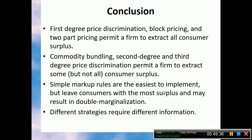In conclusion: first-degree price discrimination, block pricing, and two-part pricing permit a firm to extract all consumer surplus. Commodity bundling, second-degree, and third-degree price discrimination permit extraction of some but not all consumer surplus. Simple markup rules are easiest to implement but leave consumers with the most surplus and may result in double marginalization. Different strategies require different information. Thank you very much.